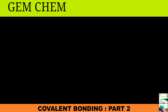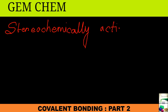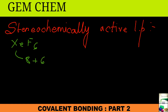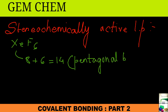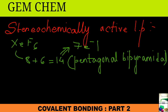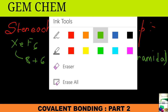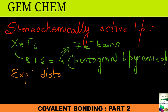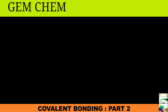Now we move to stereochemically active and inactive lone pairs. A stereochemically active lone pair is one that changes the geometry of the molecule. The example is XeF₆: 8 electrons from xenon plus 6 electrons from fluorine gives 14, which predicts pentagonal bipyramidal geometry with 7 electron pairs. However, experimentally, the structure is found to be a distorted octahedron.